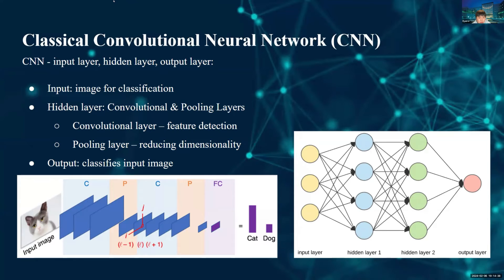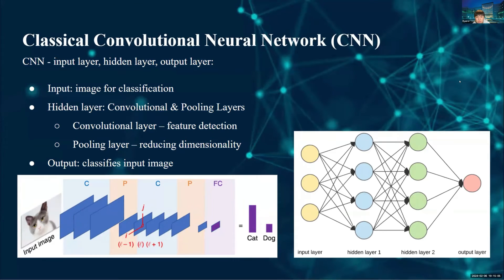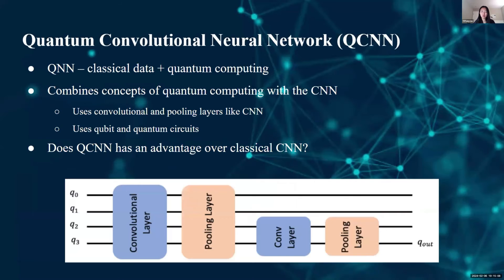In this image, these circles are perceptrons, which can take an input and give an output. The algorithm's learning process adjusts these weights to detect patterns. Looking at the hidden layers, we are primarily looking at convolutional and pooling layers. The convolutional layer performs feature extraction, and the pooling layer reduces the dimensionality of the MRI scan. Finally, the output layer classifies the scan. Our QCNN will use classical data with quantum computing, combining quantum computing concepts with the CNN.